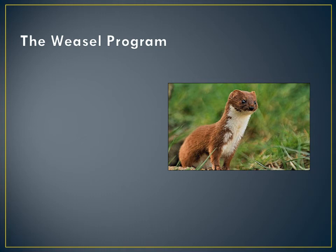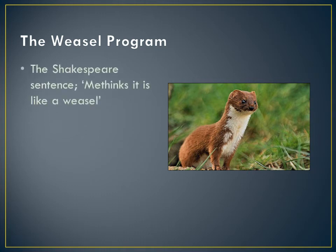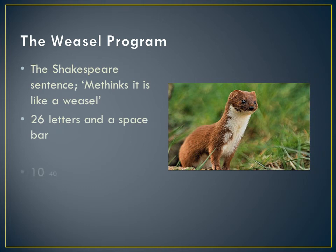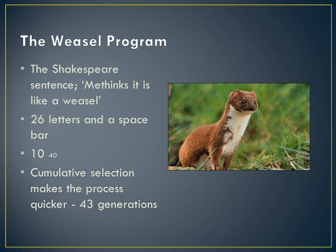Dawkins takes the sentence from Shakespeare, 'Methinks it is like a weasel', which takes 26 letters and a spacebar. He points out that if one monkey randomly typed any combination of letters, it would take time, but eventually he would, by chance, type this sentence. The number of combinations Dawkins worked out was 10 to the power of 40. If we apply cumulative selection by letting the computer learn from previous attempts, the process is actually quicker — it is 43 generations.